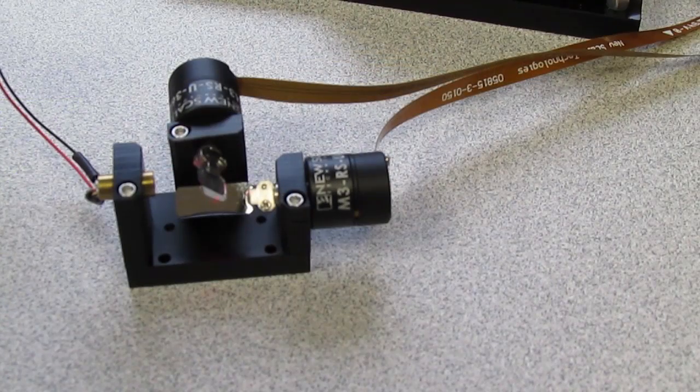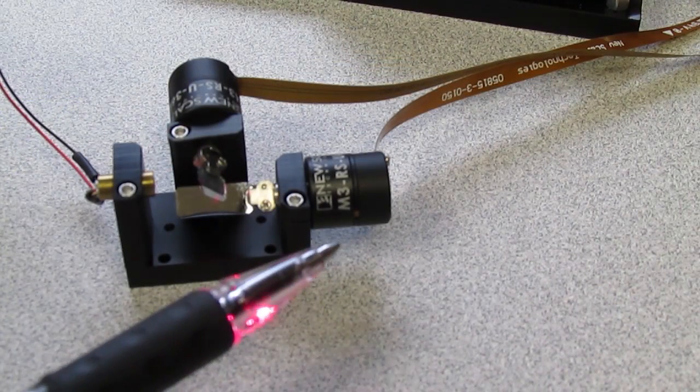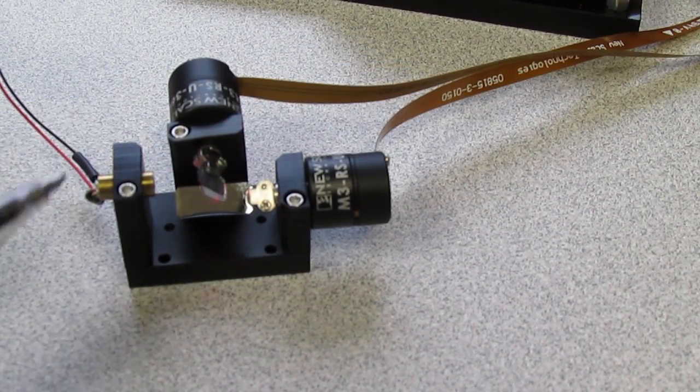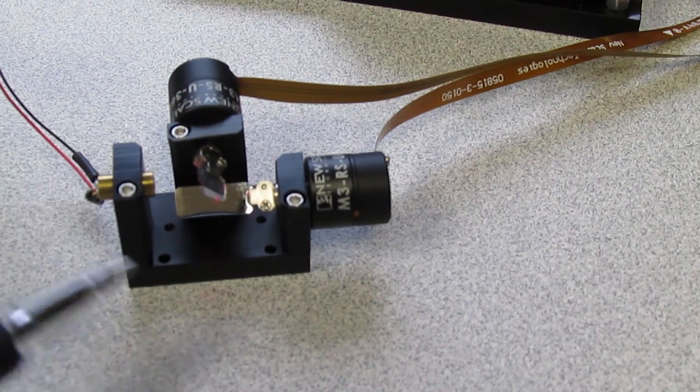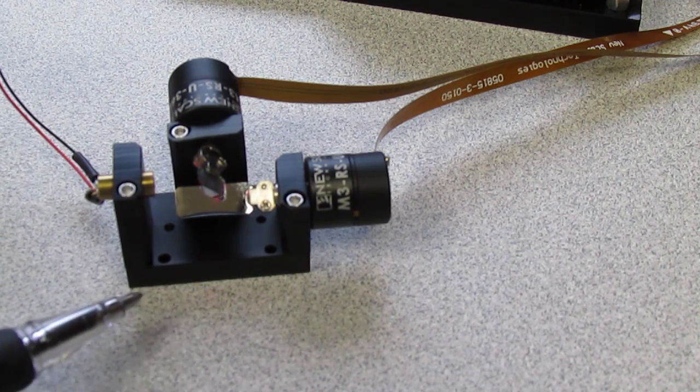The dual-axis beam steering developer kit includes two M3 RSU modules with mounted mirrors, a 650 nm collimated laser diode, and two-axis bracket and base.